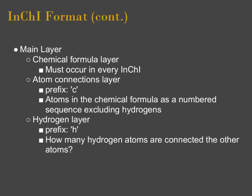The main layer has three basic sub-layers: the chemical formula layer, the atom connections layer, and the hydrogen layer. The chemical formula layer is a necessity in every InChI — it's just the chemical formula listed in the string. The atomic connections layer is always prefixed with a lowercase 'c', which stands for connections, and then it's a list of numbers corresponding to the atoms in the chemical formula, excluding hydrogens. The hydrogen layer captures those hydrogen atoms and how they're connected, and is prefixed with an 'H' standing for hydrogen.